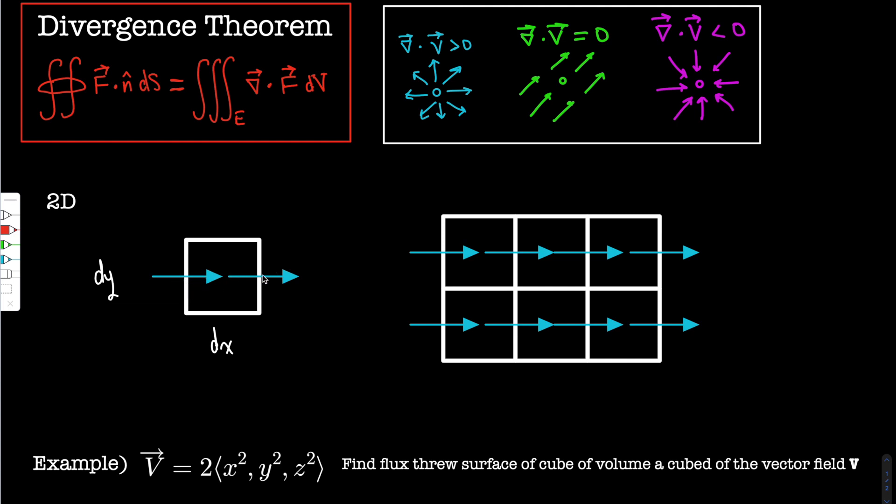It's entering the square, and this is leaving the square. If these are the same, you'll get this case, right? So the divergence is zero. If this one is bigger than this one, then it's positive, right? You have more leaving. And if this is smaller, then you have negative, and that's leaving.